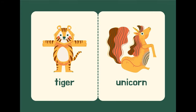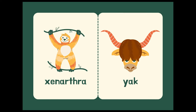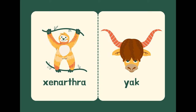U is for unicorn. V is for vampire bat. W is for worm. X is for xenarthra.